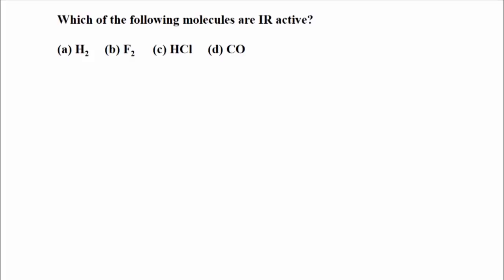The first question: which of the following molecules are IR active? The choices are H₂, F₂, HCl, and CO. H₂ and F₂ are homonuclear diatomic molecules, while HCl and carbon monoxide are heteronuclear diatomic molecules. Therefore HCl and CO are IR active — the correct answers are C and D.